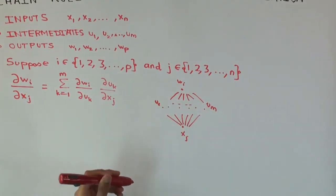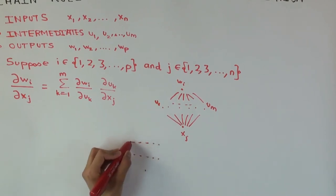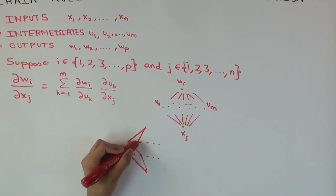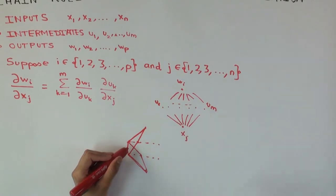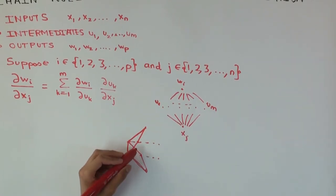The dependency could occur through any of these guys. For each of these pathways, you have to figure out the partial derivative via that pathway, which is here. And then you have to add up over all the pathways. Now, if I had a two-stage type of thing, imagine you have first-level intermediate, second-level intermediate, and output.